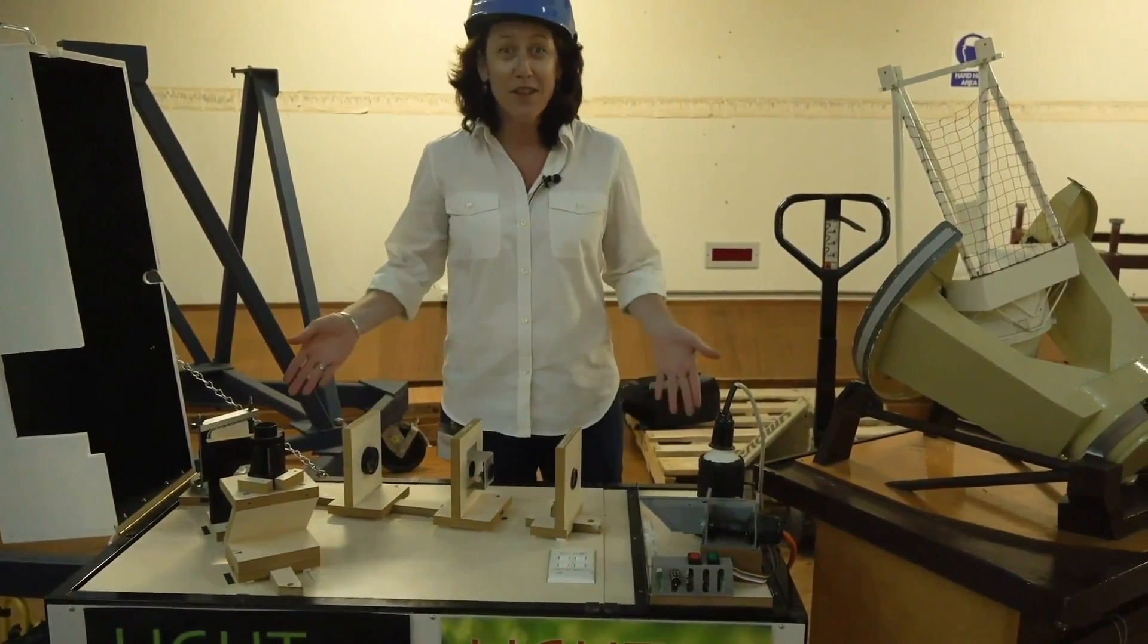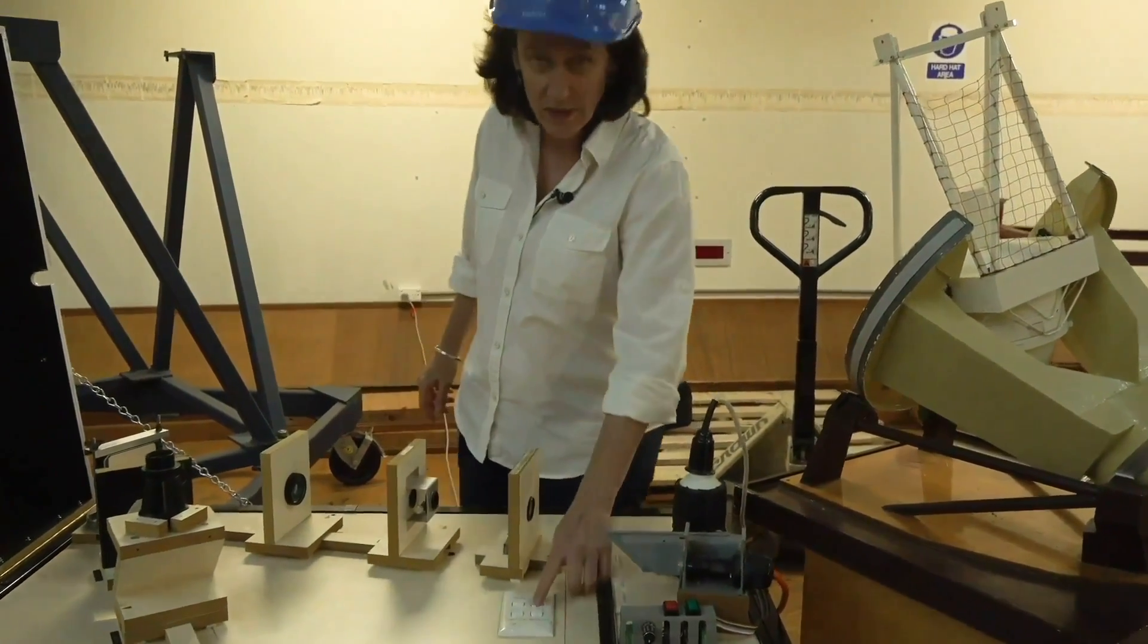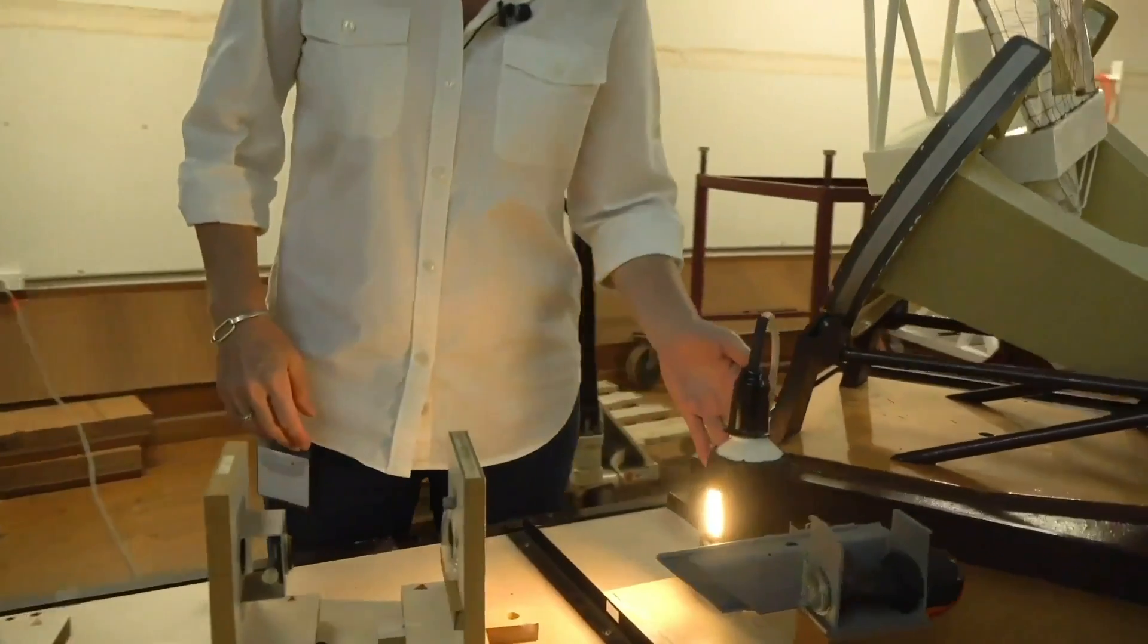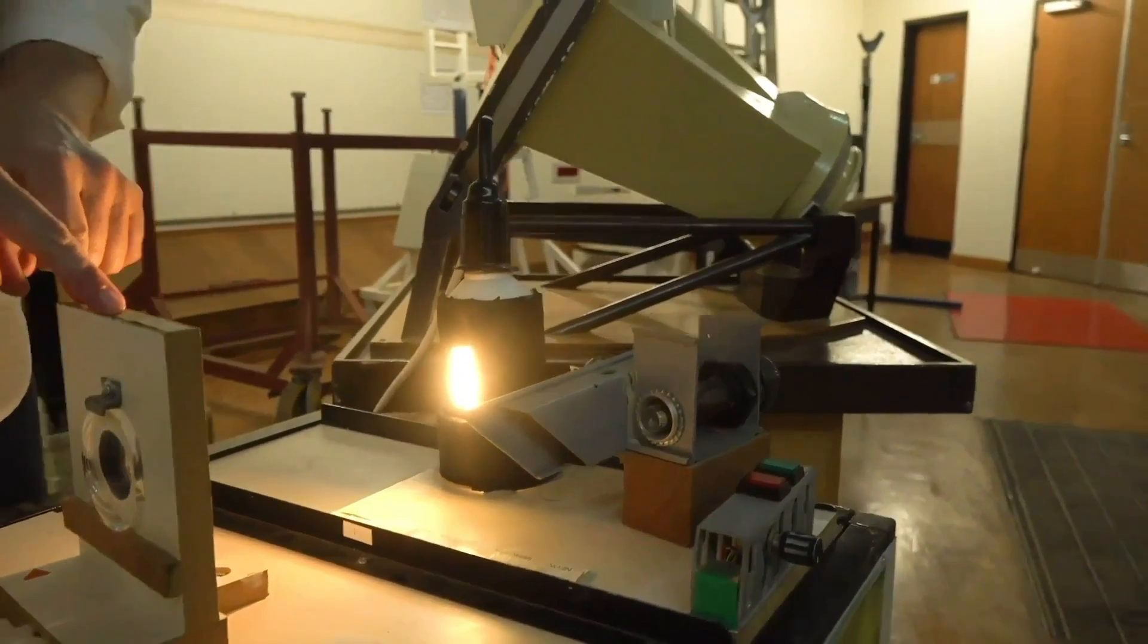Well we need a spectrograph and this is a very rudimentary spectrograph. It's just the basics. So what we need is a light source. In this case it's a fluorescent light emitting through a collecting lens.